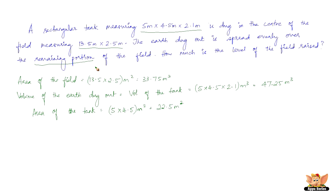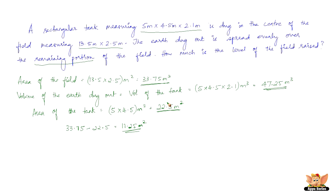The area of the tank is length times breadth, which is 5 × 4.5 m², giving 22.5 m². Now we find the area over which the dug-up earth is spread, which is the area of the field minus the area of the tank: 33.75 − 22.5 = 11.25 m². So we have 11.25 m² of area over which to spread the earth. The volume of earth dug out is 47.25 m³, and the area on which it is spread is 11.25 m².